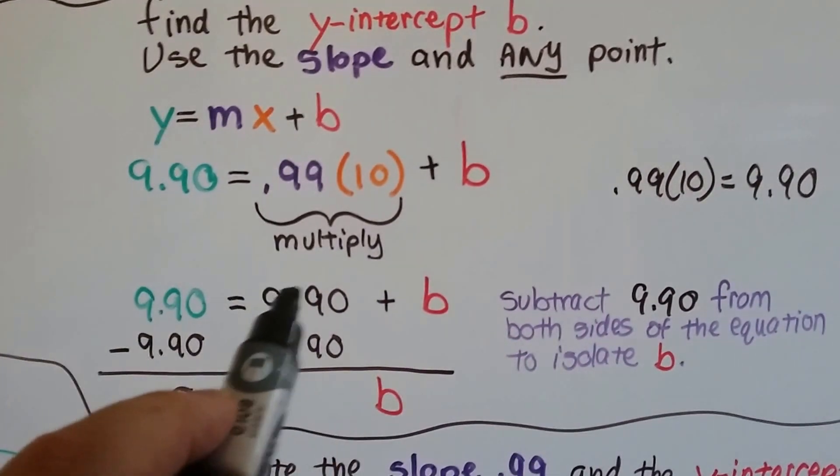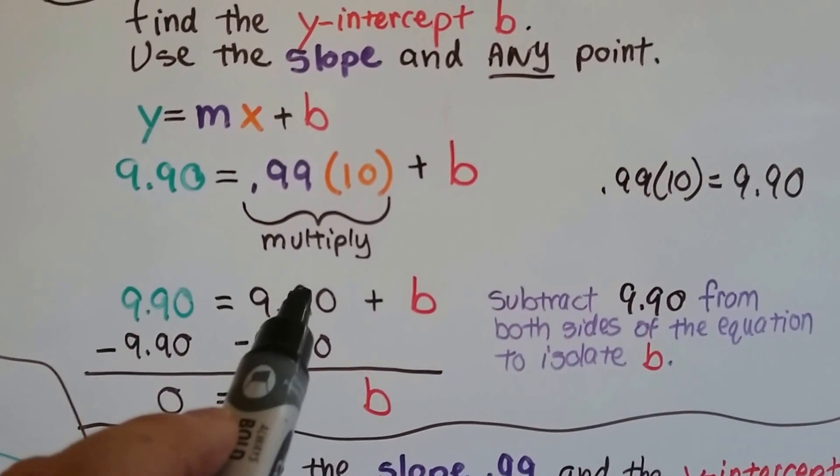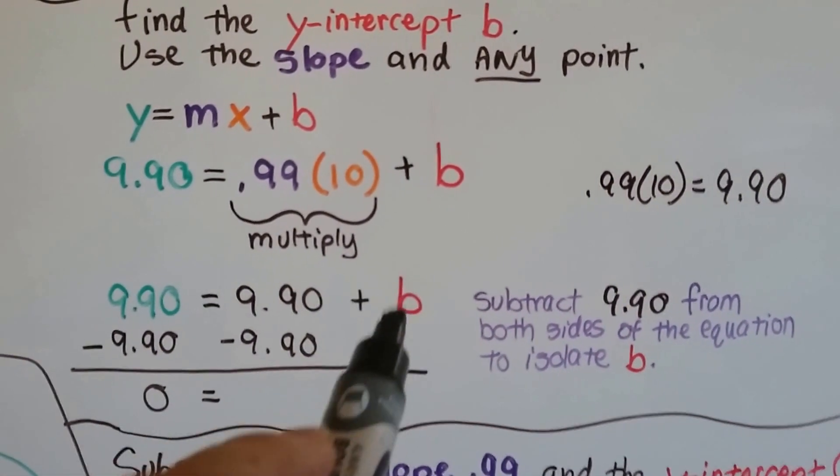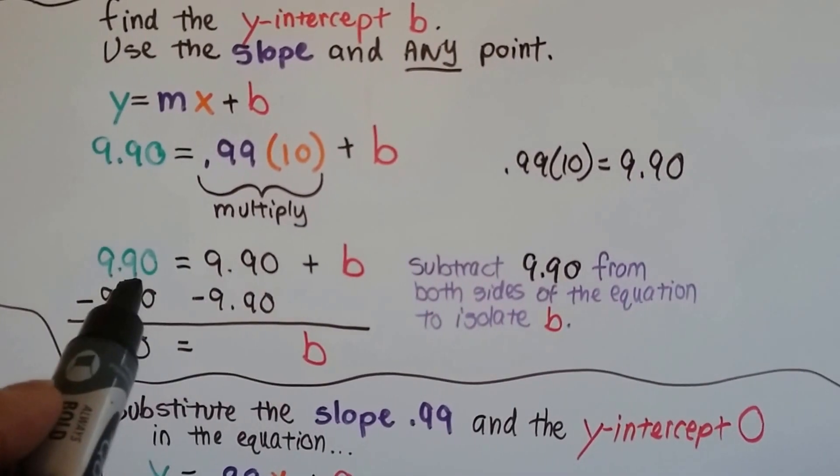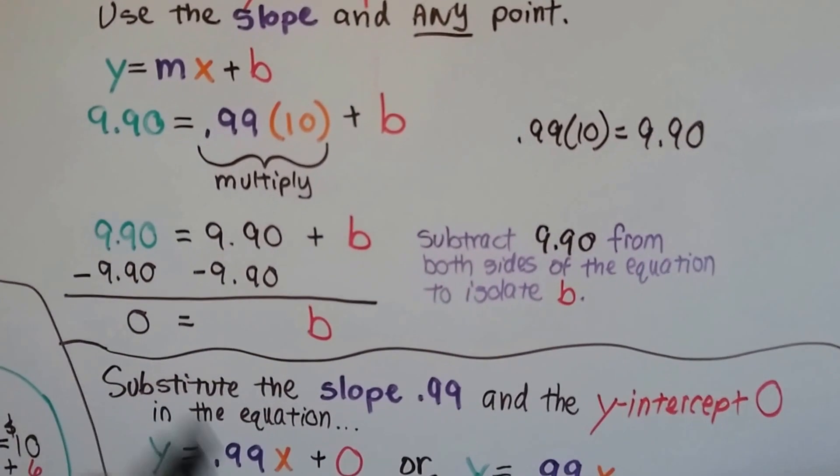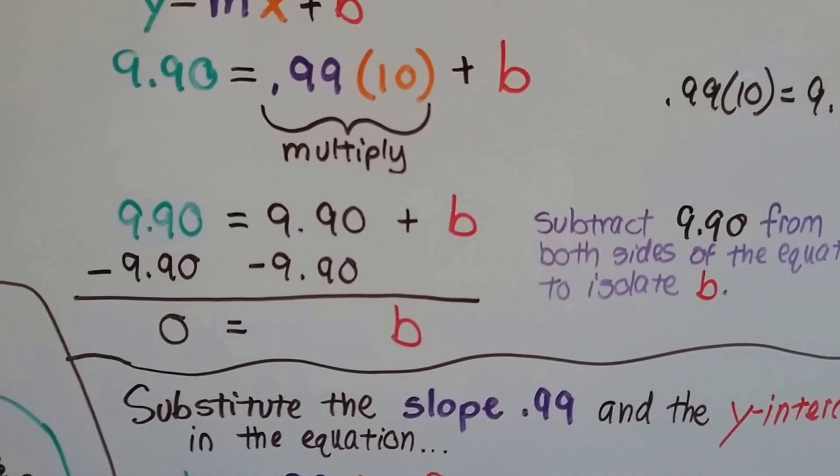We plug that into the formula right here, and we get 9.90 equals 9.90 plus the b. Now, we subtract the 9.90 from each side, so that we can isolate the b, and it comes out as zero.